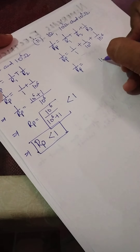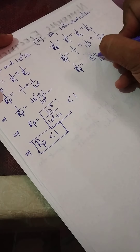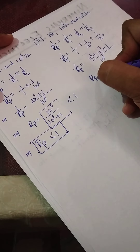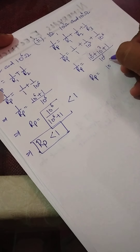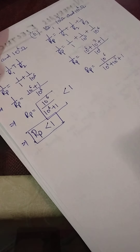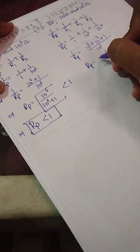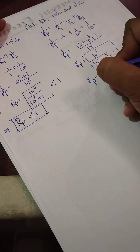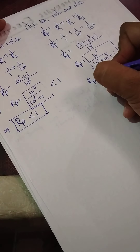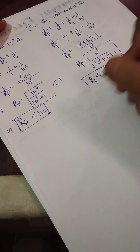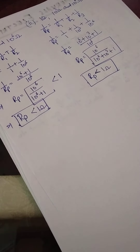The LCM will be 10⁶. The value of Rp will be 10⁶ upon (10⁶ + 10³ + 1). If you solve this, the value will be less than 1 in both cases. This is one of the characteristics of parallel connections: the effective resistance reduces greatly when we connect appliances in parallel.